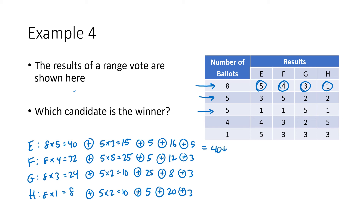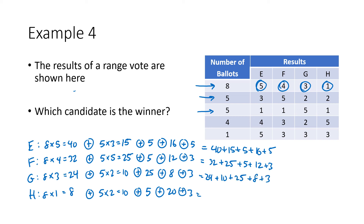Adding up all the points: E's total is 40 + 15 + 5 + 16 + 5 = 81. F's total is 32 + 25 + 5 + 12 + 3 = 77. G's total is 24 + 10 + 25 + 8 + 3 = 70. H's total is 8 + 10 + 5 + 20 + 3 = 46. E has the highest total, so E is the winner.